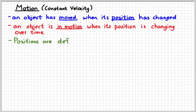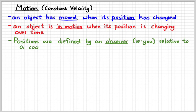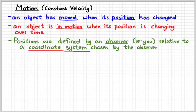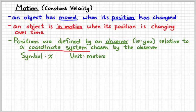Now a position is something that is defined by an observer — for instance, yourself. Positions are measured relative to a given coordinate system. You, the observer, choose what that coordinate system is going to be. We measure positions in meters and give them the symbol x. Right now we're just going to stick to motion in one dimension, but later on we'll also use the symbol y for two dimensions, and z for three-dimensional motion.